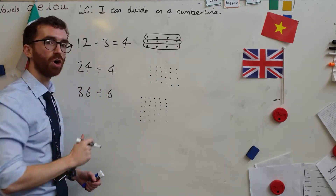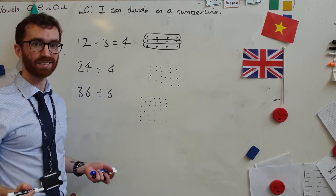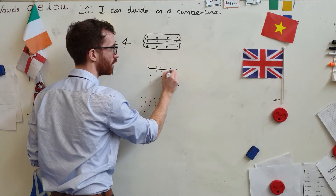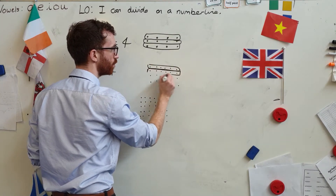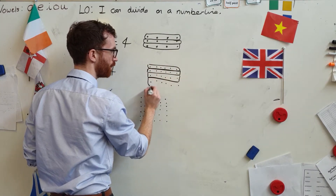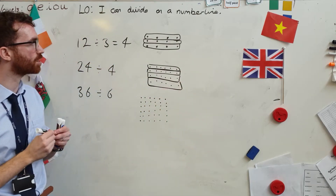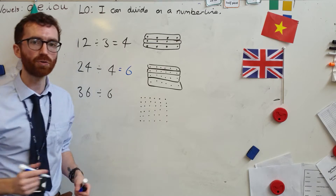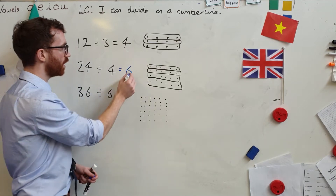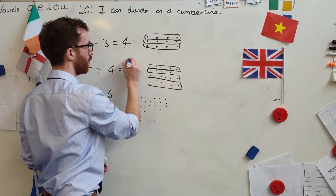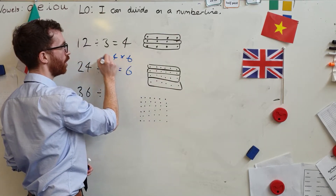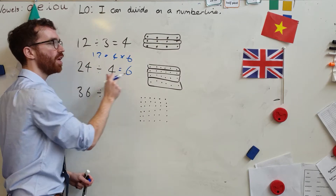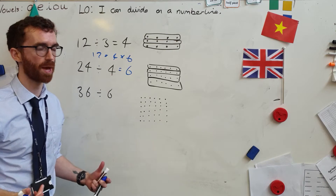So 24 divided by four. Let's split 24 into four equal groups — one, two, three, and four. How many in each group? Six in each group. I can check that because six times four equals 24. In other words, I'm asking: how many fours in 24? There are six fours in 24.